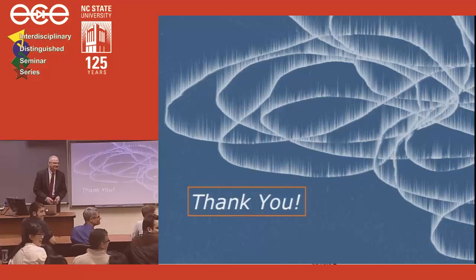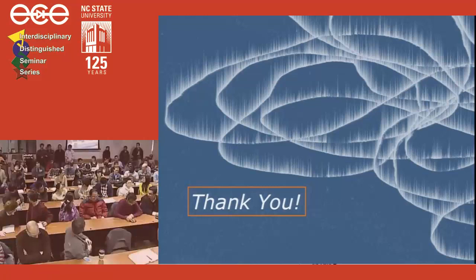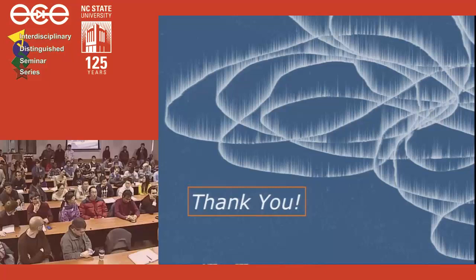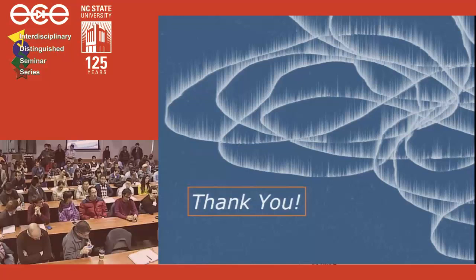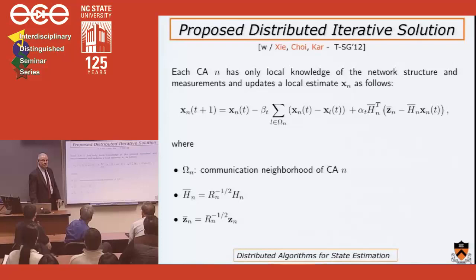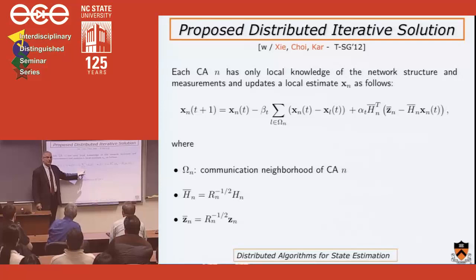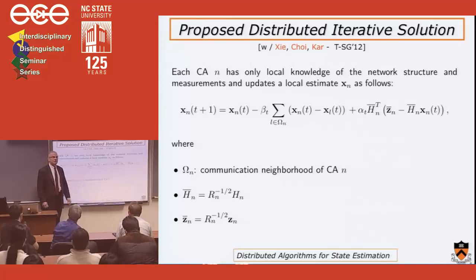We have a couple of minutes for questions. If, for example, we have 1,000 global states to estimate, each agent needs to share its estimate of all those 1,000 states with its neighbors, right? That's a good point. To compute the consensus penalty, you do have to know the estimates of all your neighbors, so if the state is a vector of 1,000, you have to share them all with your neighbors. But the point is: only with your neighbors — you don't have to flood the whole grid.